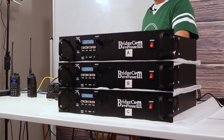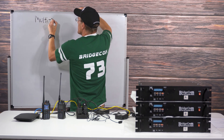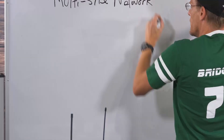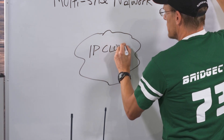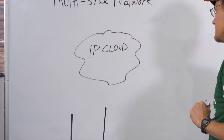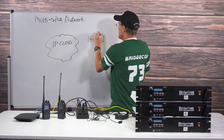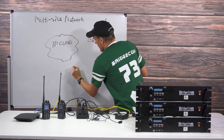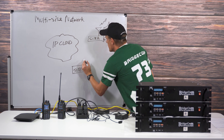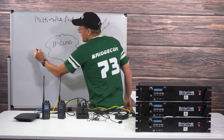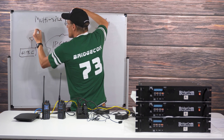What we have on display is a three-site system and I'm going to quickly do a block diagram to show you what's going on. You've got an IP cloud — basically the internet — and then you've got an RF endpoint, Site A, another site called Site B, and another site called Site C.